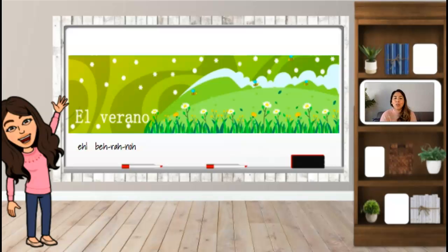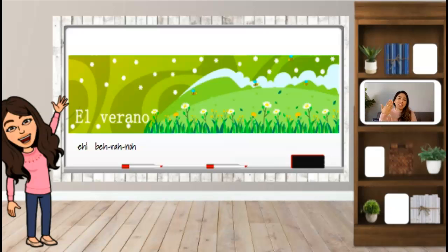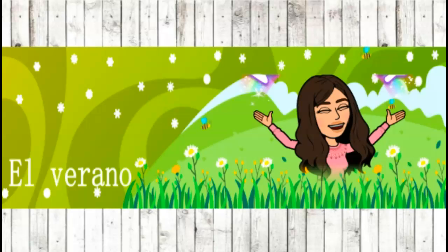Ahora tenemos el verano. El verano. Now we have summer, or en español, el verano. En el verano, normalmente, tú estás de vacaciones. During el verano or summer, more than likely, you are on vacation from school. El verano se pone un poco caliente. It gets a little bit hot. En el verano, puedes salir afuera a jugar. Puedes hacer tal vez paseos como a la playa o a los parques también. You can also go on trips maybe to the beach or to the park as well. Eso es el verano.